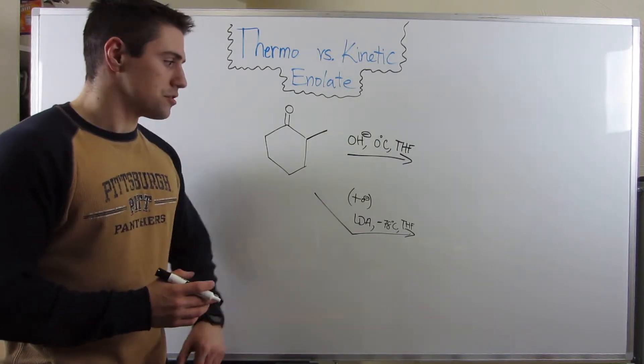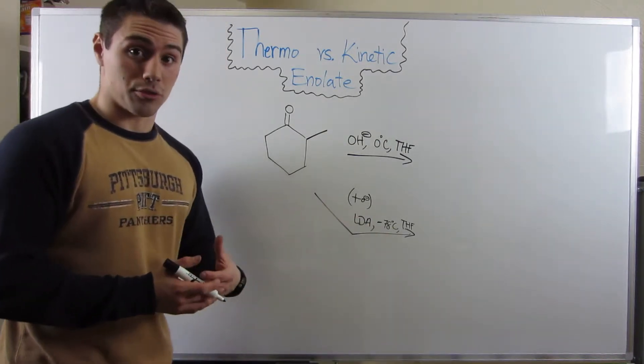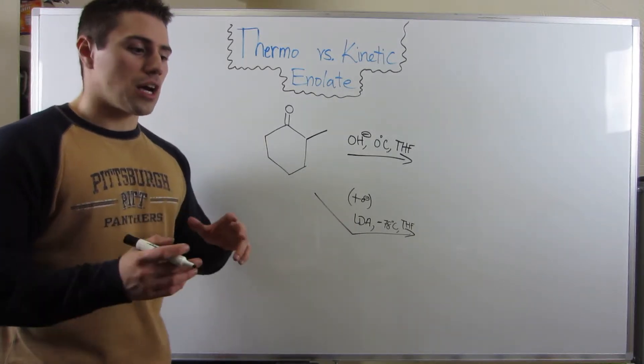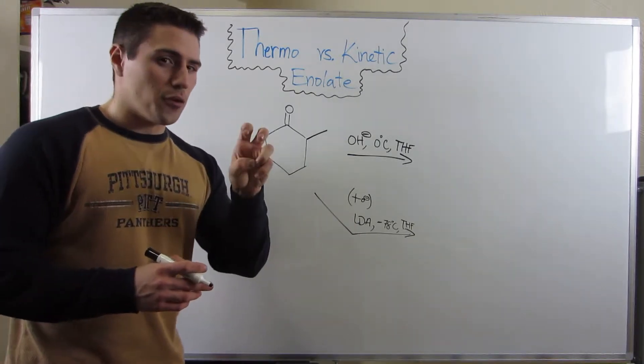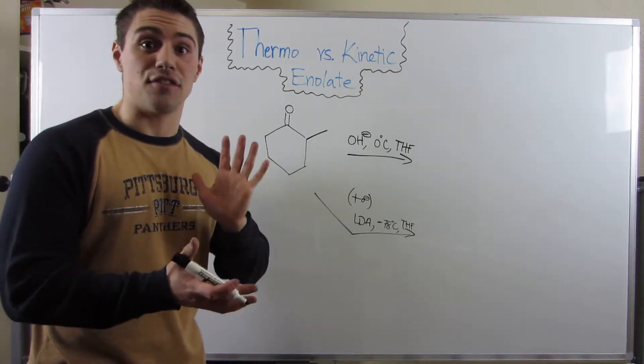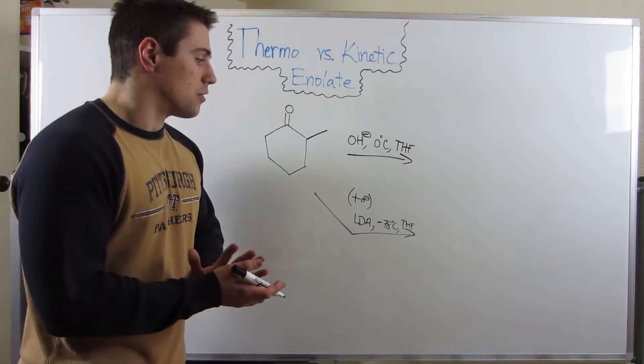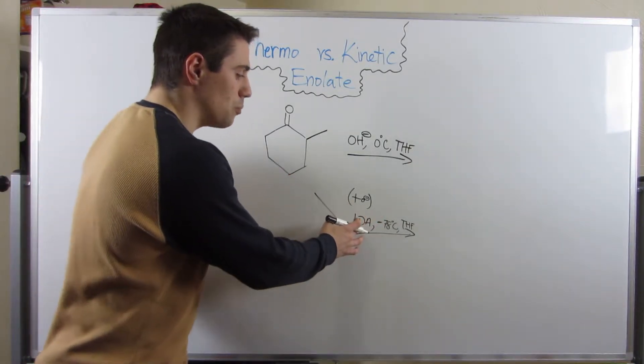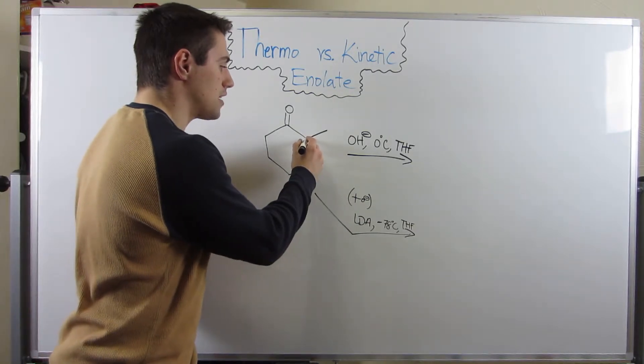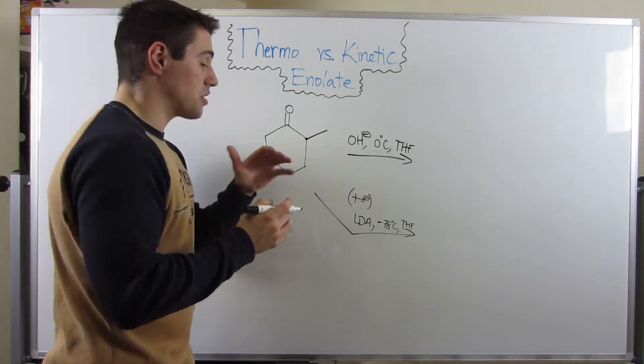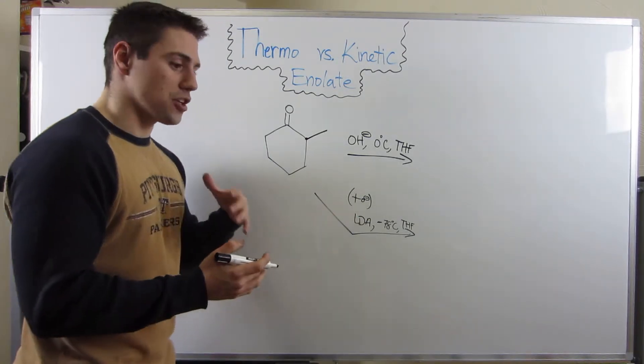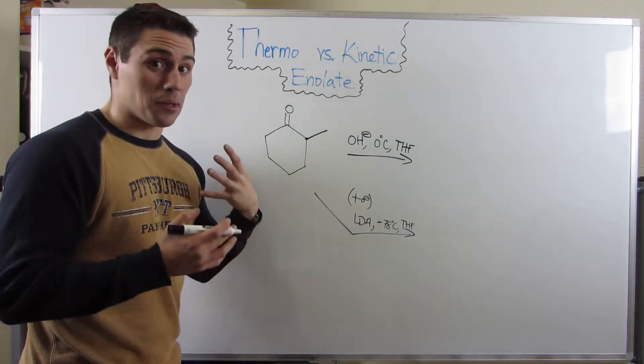Let's take the bottom route first. We have extremely cold temperatures and a very big bulky base. These are unfavorable conditions, and the fastest, easiest thing is going to occur. Because it's so cold and we're so bulky, we're not going to nestle into the more sterically encumbered alpha carbon position. This base is going to grab the easiest alpha proton it can possibly grab.